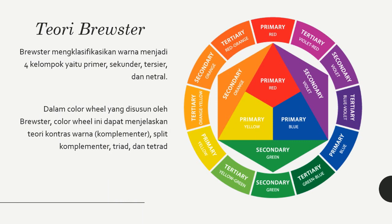Sebenarnya, dalam teori warna sendiri ada beberapa pakar yang menjelaskan mengenai teori warna. Contohnya ada Sir Isaac Newton, ada teori Brewster, ada Munsell, dan lain-lain. Namun kali ini saya akan menyampaikan tentang teori Brewster, karena teori inilah yang paling umum digunakan dalam teori warna.